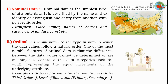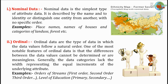Ordinal data are the type of data in which the data values follow a natural order. One of the most notable features of ordinal data is that the differences between the data values cannot be determined or are meaningless. Generally, the data categories lack equal width representing equal increments of the underlying attribute. Examples include orders of streams — first order, second order, third order, etc. — and level of education: primary and secondary, etc.